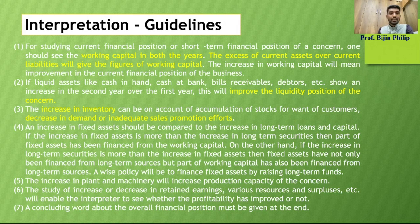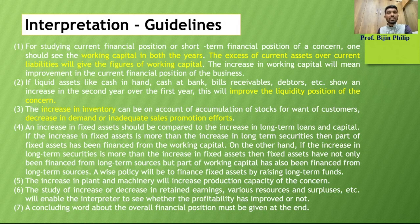Looking at the retained earnings, profit and loss account, or reserve and surplus of the organization, we can analyze whether the company's earning capacity has increased or not. Compared to the previous year, if retained earnings, profit and loss account, and reserve and surplus have increased, that means the company is gaining profit and is in a comfortable position.